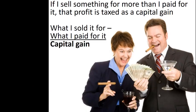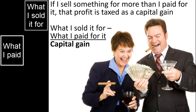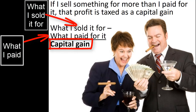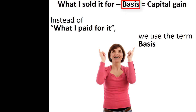A separate set of tax rules applies to capital gains. A capital gain occurs when a taxpayer sells an investment for more than he or she paid for it, including the cost of improvements. This profit — the difference between the sale price and purchase price — is the amount of the capital gain. Capital gain is calculated as the sales price less the taxpayer's basis, also known as adjusted basis, in the property.